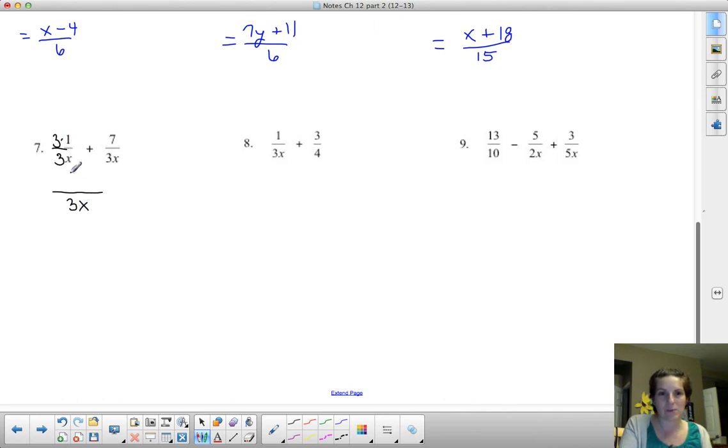3 times 1 is 3 plus, and that would be a 7 because I didn't have to change this second fraction at all. And then I can combine like terms. 10 over 3x.